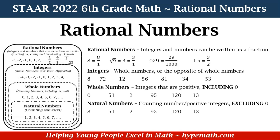Rational numbers are integers and numbers that can be written as a fraction. Integers are whole numbers and the opposite of whole numbers — any number that can be written as a positive and a negative. Whole numbers are integers that are all positive, including zero. Natural numbers are counting numbers — positive integers — excluding zero.